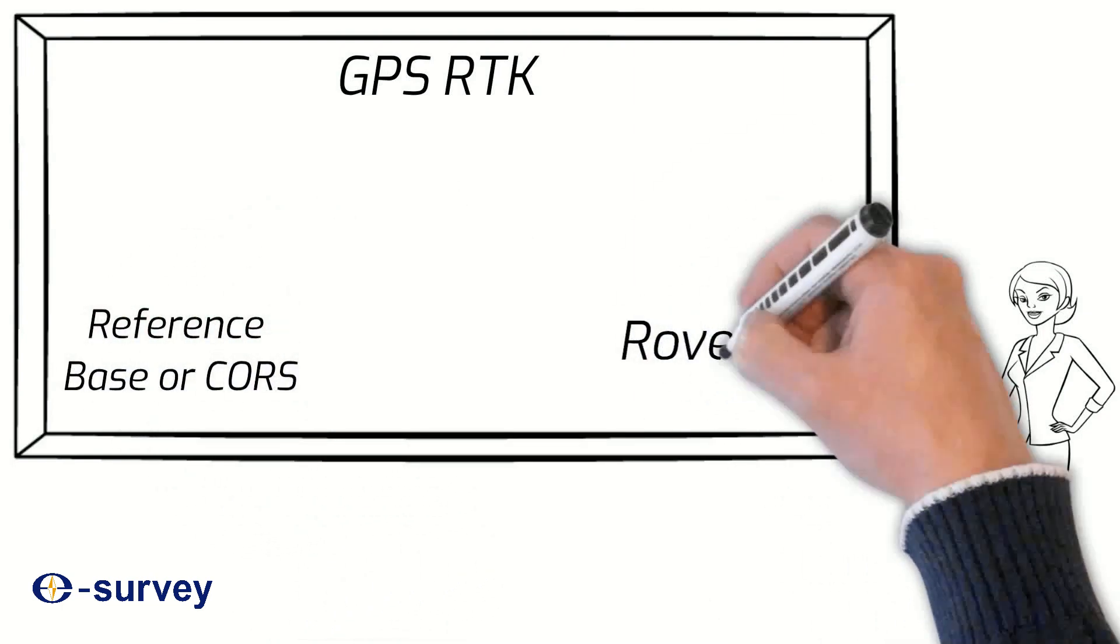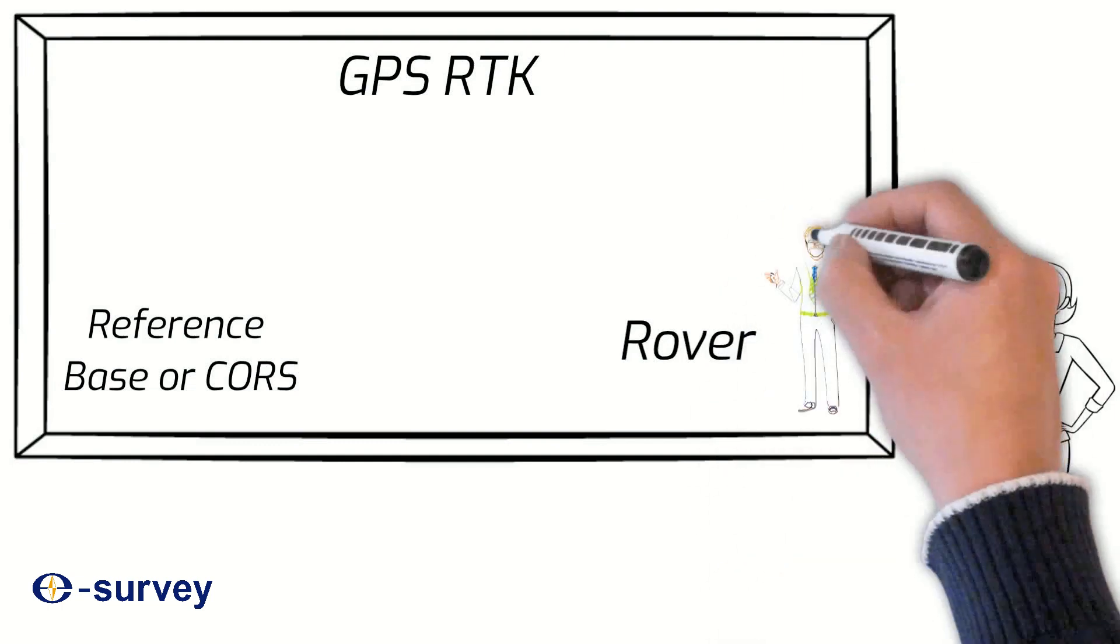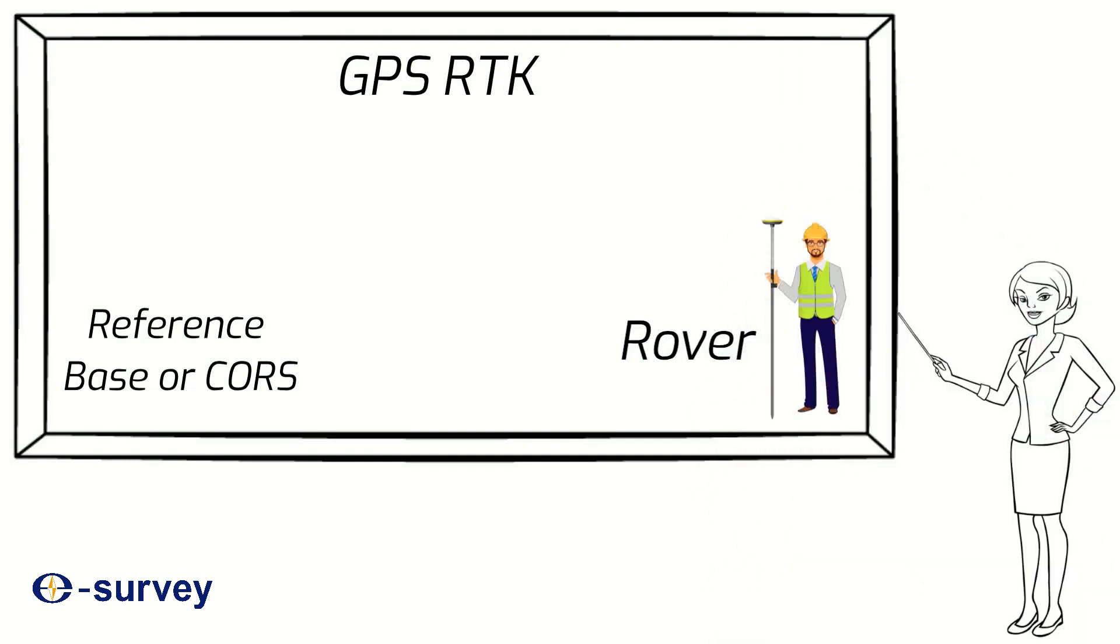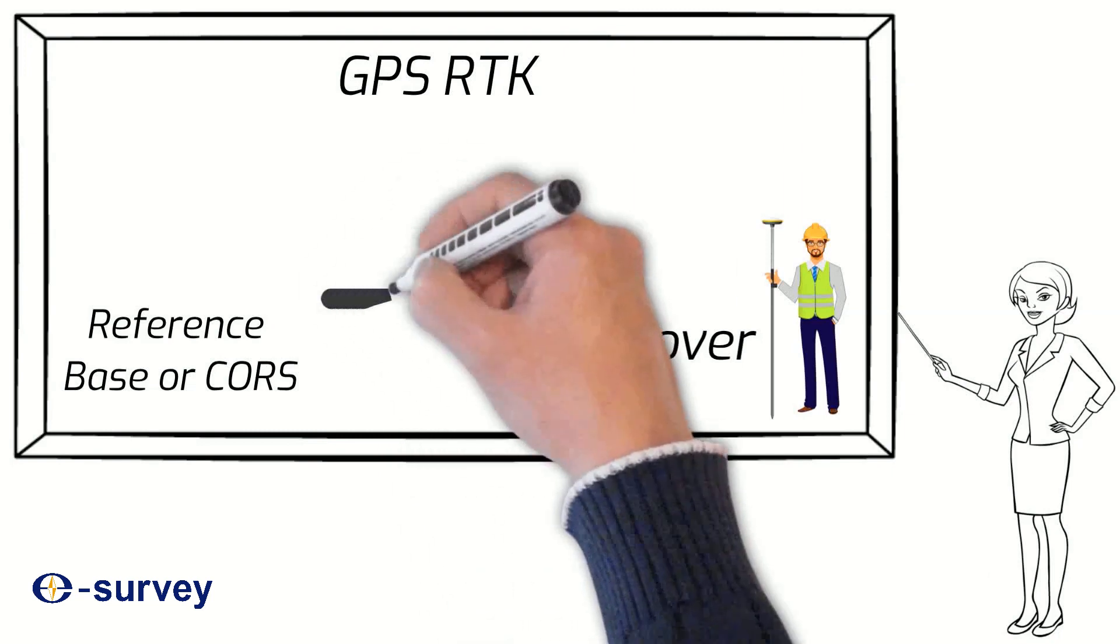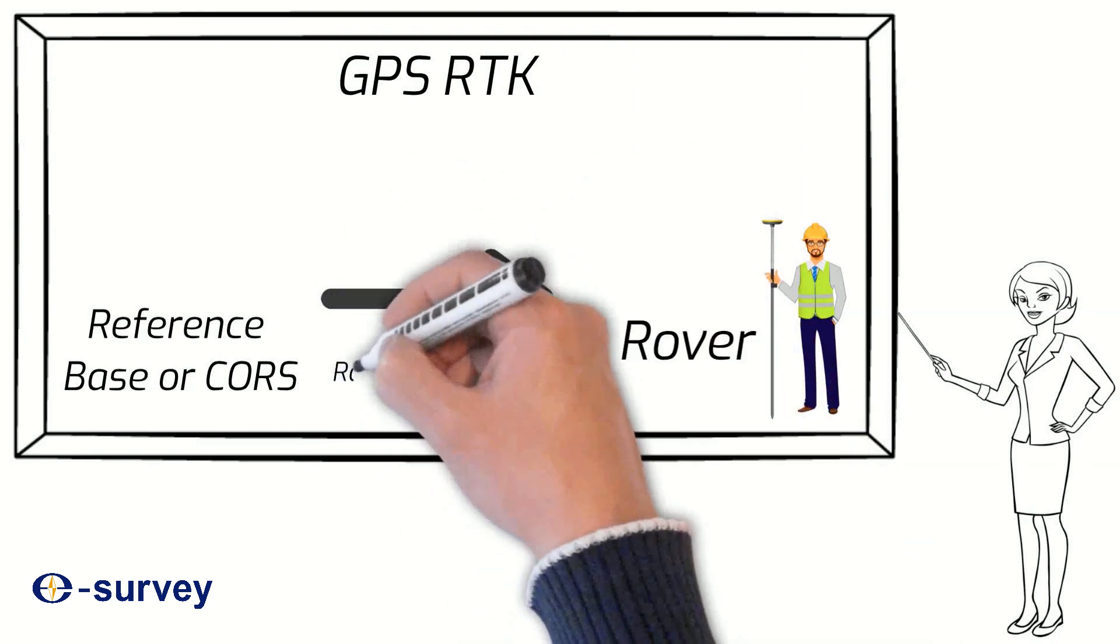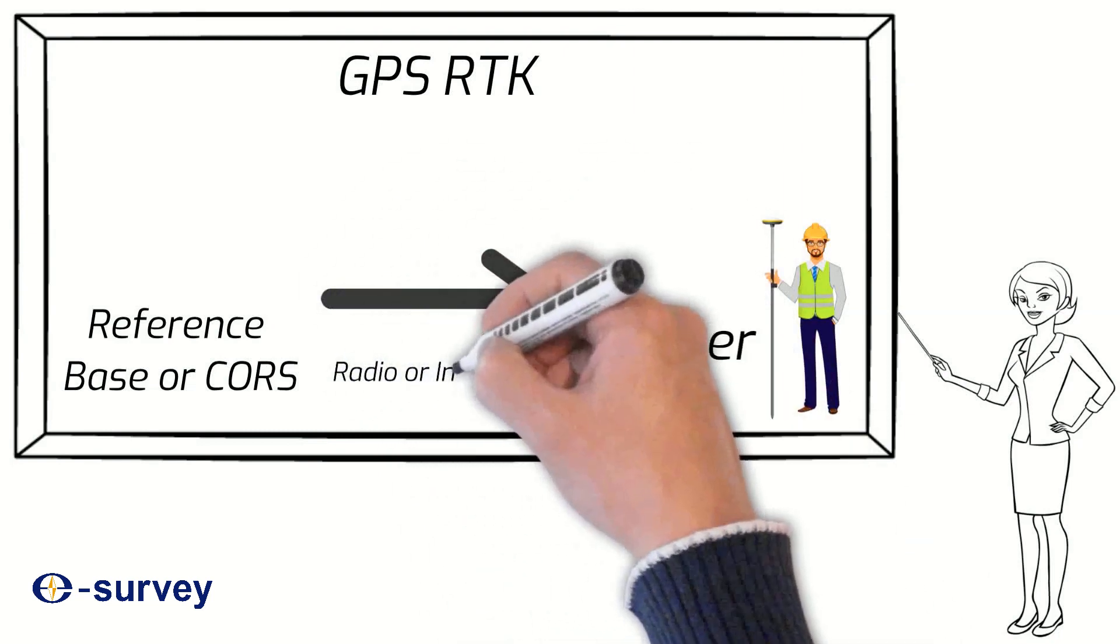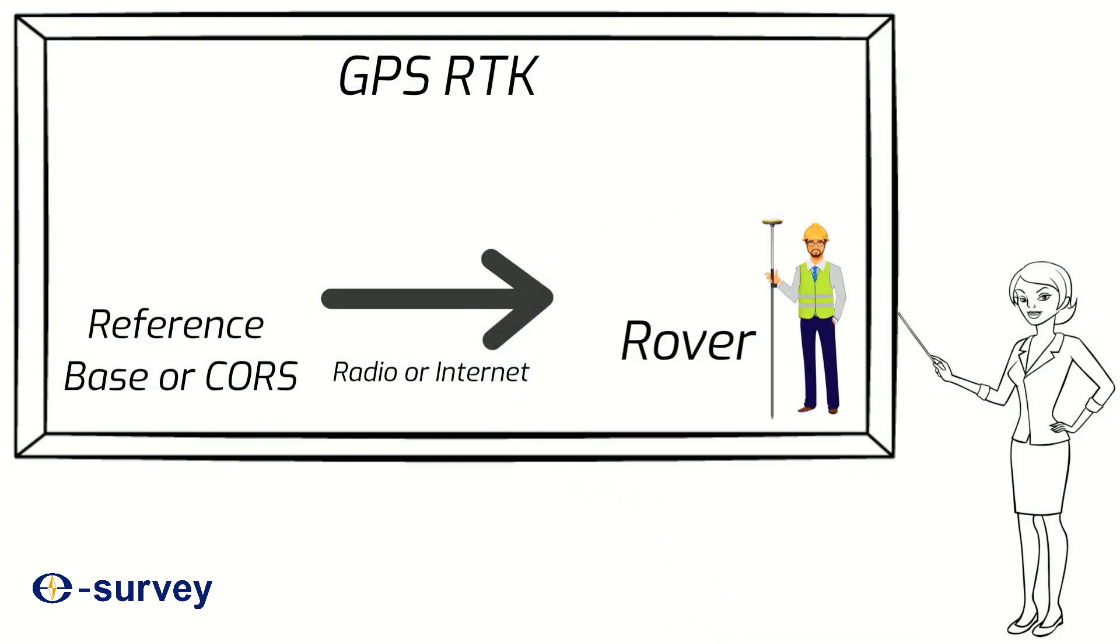Both these references use either internet or radio to send the correction data to a rover. Using these references will bring the quality of your work to within 2 cm. Without these references, the RTK system and GPS will not work.